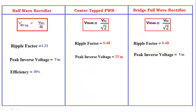The efficiency of the half wave rectifier is 40%. For the center tapped full wave rectifier, the efficiency is 81%. For the bridge full wave rectifier, the efficiency is also 81%. So for the center tapped and bridge full wave rectifiers, the efficiency is the same.